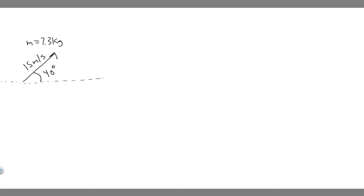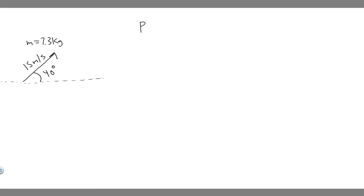So we have the shot put traveling like this, and what we're trying to do is find the initial horizontal and vertical components of the momentum. The formula for momentum is p = mv.